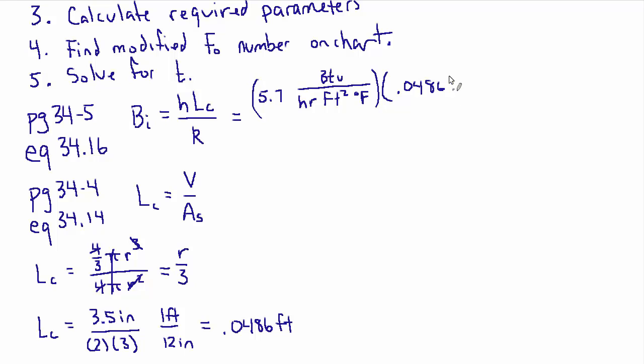Now we can bring that back up to the formula for the BO number. The film coefficient was given to us as 5.7 BTU per hour foot squared degrees F and the characteristic length 0.0486 feet and the conductivity is 0.42 BTU foot over hour foot squared degrees F. A lot of these units go away, the film coefficient and the conductivity have basically the same units except the conductivity has this extra length unit in here but that's going to cancel out with these feet and the rest goes away.